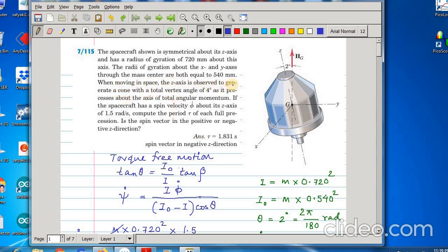When moving in space the z axis is observed to generate a cone with a total vertex angle of 4 degrees as it precesses about the axis of total angular momentum. So, here the weight acts through this point and about this point the weight cannot create any moment. So, about this g it is a torque-free motion. So, the angular momentum about g is a constant vector in inertial reference. Constant means its magnitude and its direction neither changes. So, it remains constant in inertial reference and the angle between this small z axis and this angular momentum axis is theta which is 2 degrees. This is the angle of nutation which is 2 degrees.